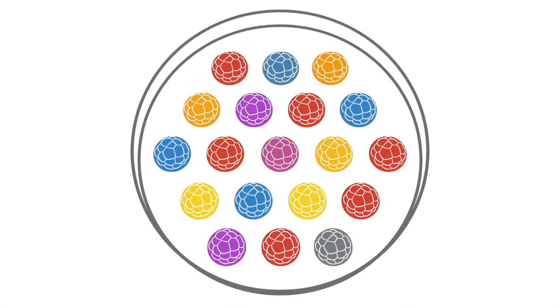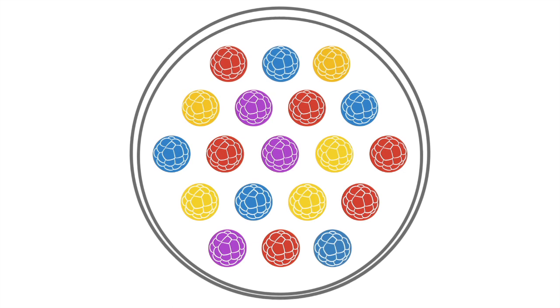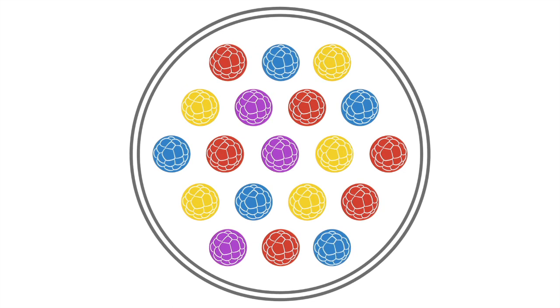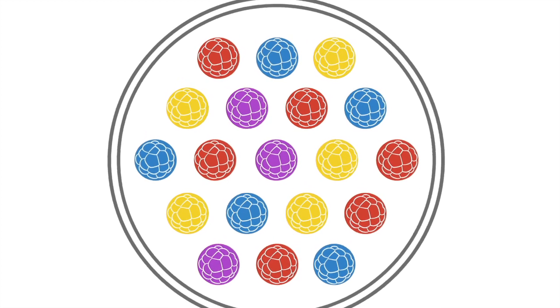And you can see here it's demonstrated or indicated by red, yellow, blue, and purple cells. But I want to highlight one particular kind of cell that can form here, which is human heart cells.